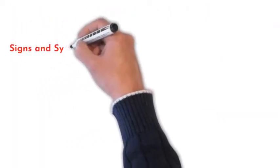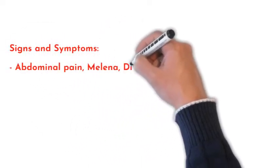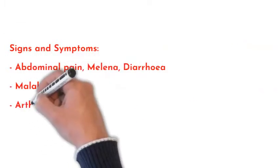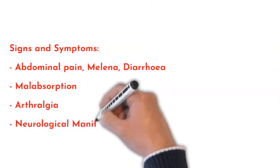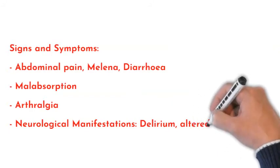Now let's go to the classic signs and symptoms: abdominal pain, melena, diarrhea, malabsorption. It presents with arthralgia due to joint involvement. Various neurological manifestations also appear like delirium and altered consciousness.